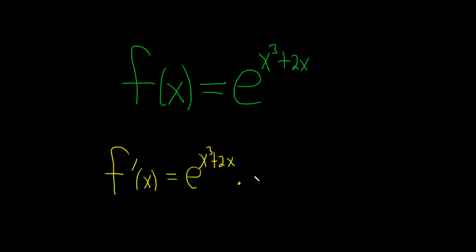So the derivative of x cubed is 3x squared, which is from the power rule, and the derivative of 2x is 2. Notice I put parentheses here. That's because there's two terms, so it's really, really important.